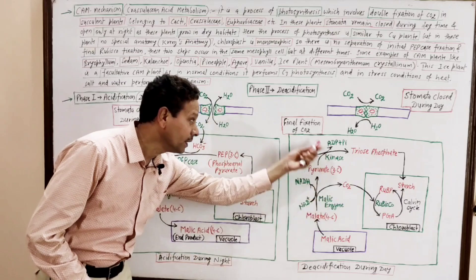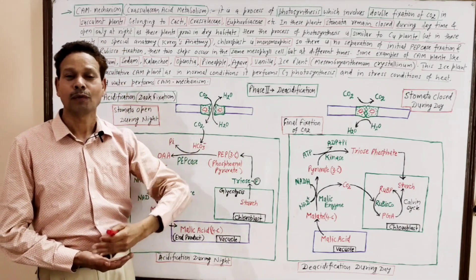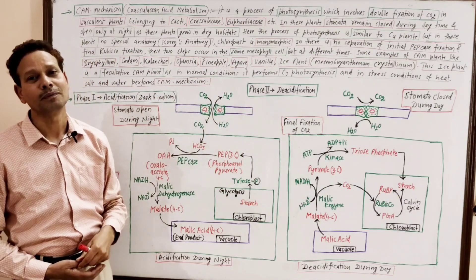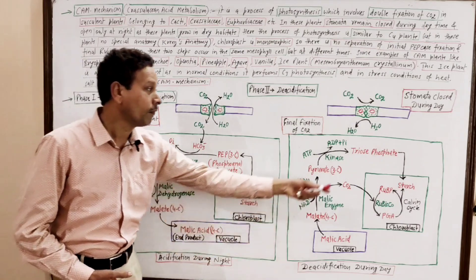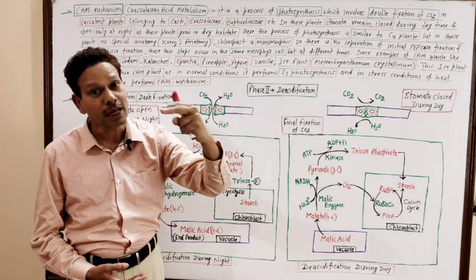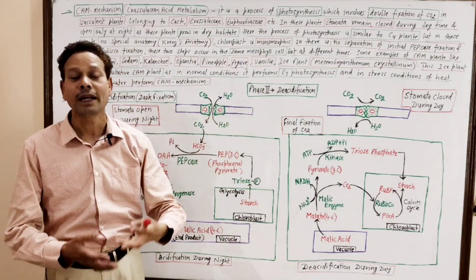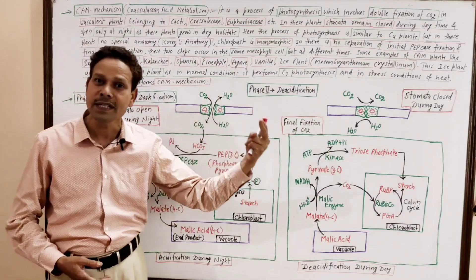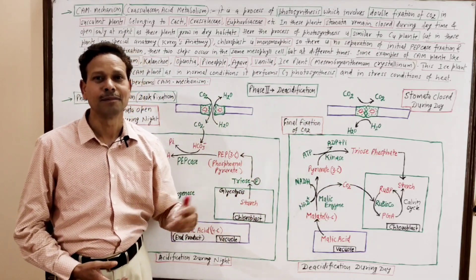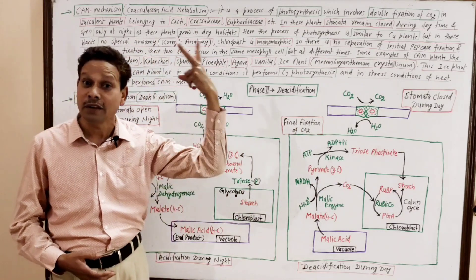In CAM plants, double fixation of CO2 occurs in the same cell. While in C4 plants, the first initial fixation of CO2 occurs in mesophyll cells and the final fixation occurs inside bundle-sheath cells. So in C4 plants, double fixation occurs in different cells — mesophyll cells and bundle-sheath cells. But in CAM plants like cactus, double fixation takes place inside the same cell but at different times.